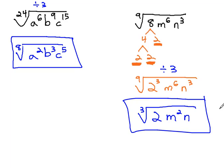The way we reduce the index on a radical is we divide the exponents and the index by the same common factor. If there is a number, we need to first find the prime factorization of that number so we can work with its exponents as well.